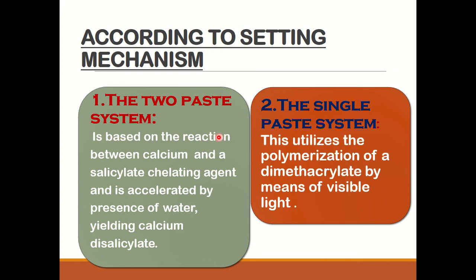Next we have the single paste system. In the single paste system, we use visible light for the curing mechanism. They also consist of calcium hydroxide and, apart from it, they comprise barium sulfate dispersed in urethane dimethacrylate resin, which contains initiators and insulators — all of which are activated by visible light. The fact that this material is based on polymeric resin allows bonding between the calcium hydroxide and the overlying composite restoration.